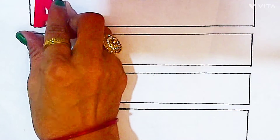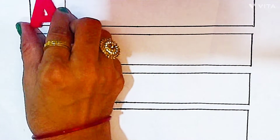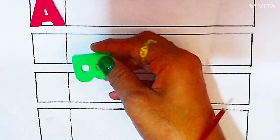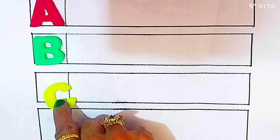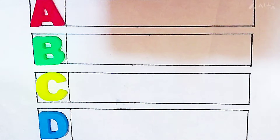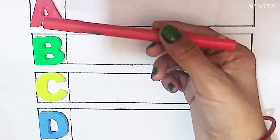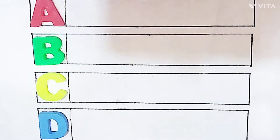A. A for apple. B. B for ball. C. C for cat. D. D for dog. Red color.